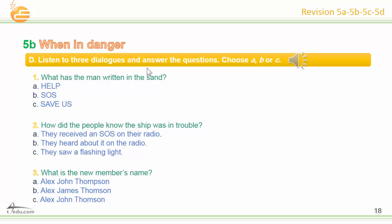Dialogue three: Are you the new member of the crew? Yes, sir. And what's your name? Alex J. Thompson. Is that Thompson with a P? No, sir. And what does the J stand for? John? It's James, actually. Okay, welcome aboard. Answers: number one C — 'save us'. Number two — they saw a flashing light. Number three B — Alex James Thompson.